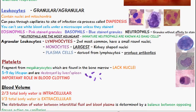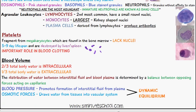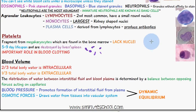Finally, regarding blood volume: two-thirds of the total body water is intracellular and one-third is extracellular. The distribution of water between the interstitial fluid and blood plasma is determined by a balance between opposing forces acting on capillaries.